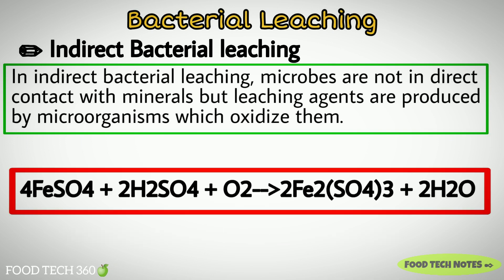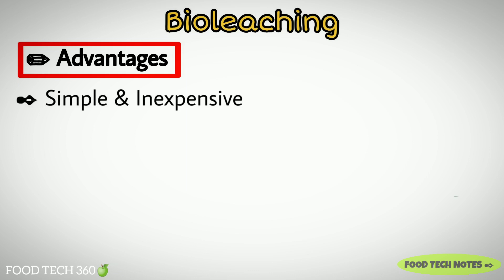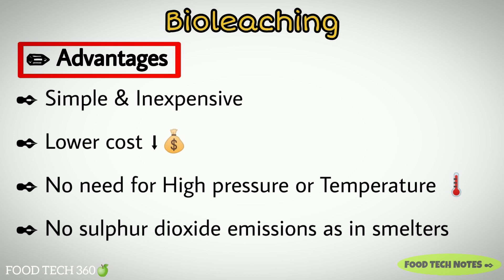This shows the oxidation of ferrous to ferric by Thiobacillus ferroxidans at low pH. Some of the benefits of bio leaching are: they are a simple and inexpensive process, substantially lower cost than traditional smelting and refining processes, no need for high pressure or temperature, and no sulfur dioxide emission as in smelters.